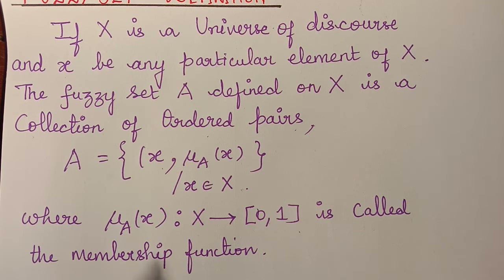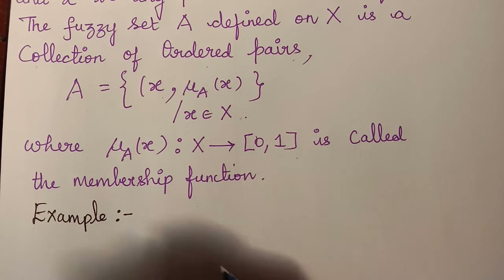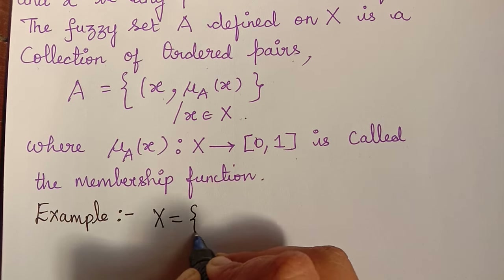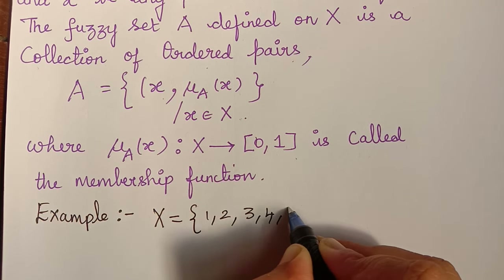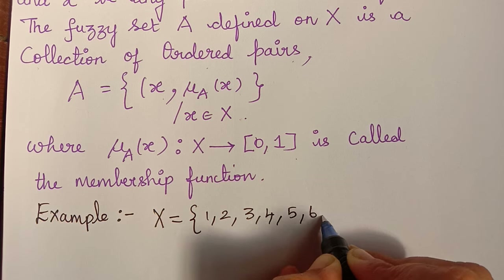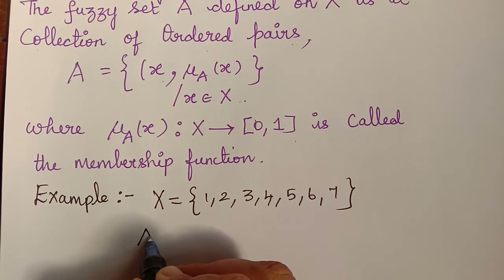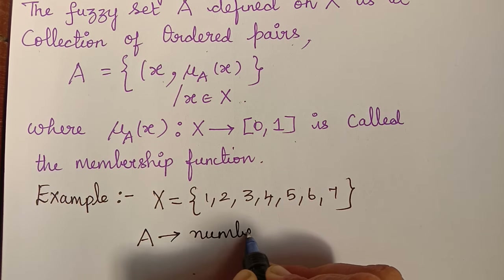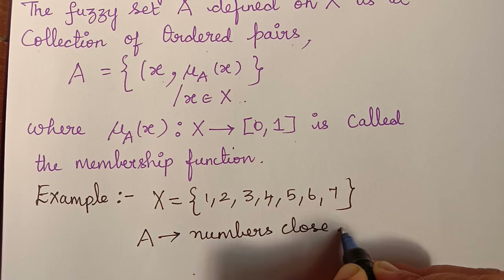So this is the concept of a fuzzy set. Now let us learn this with the help of an example. We consider a universal set X = {1, 2, 3, 4, 5, 6, 7} and we consider the fuzzy set A to be the set of numbers close to 3.